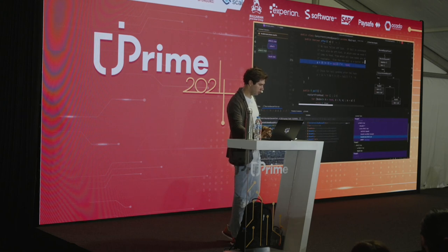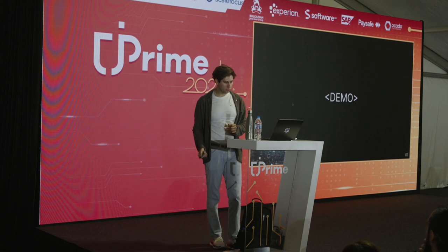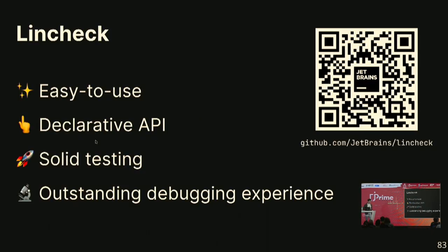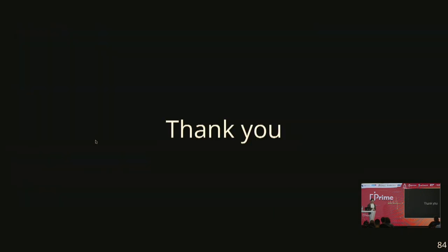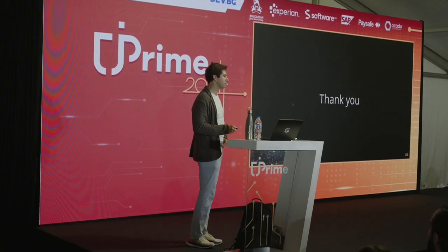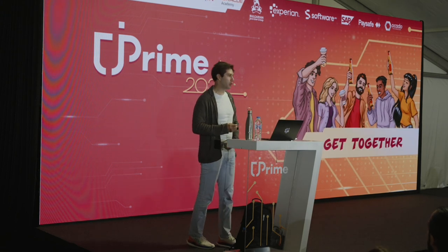To sum up: if you want to test a concurrent algorithm, please use LinCheck. It's very easy to use — you don't need to learn complex APIs, it's very straightforward, you can even ask an AI system to write a LinCheck test. With LinCheck you have solid tests and great debugging experience. And hopefully one day AI will generate correct concurrent code. Thank you.